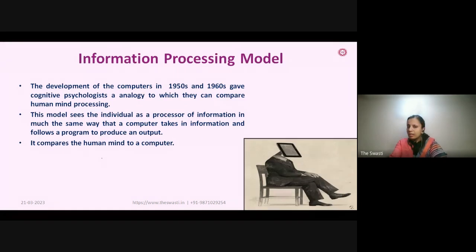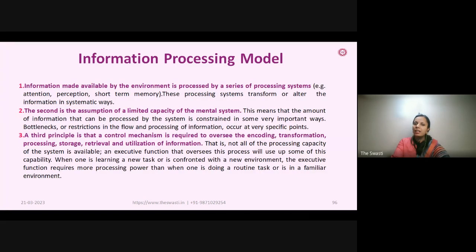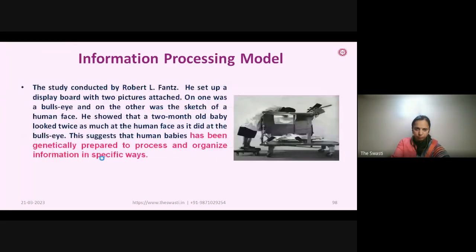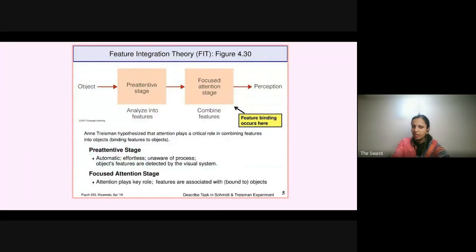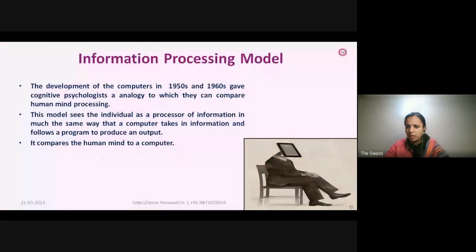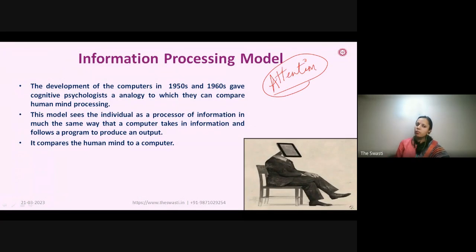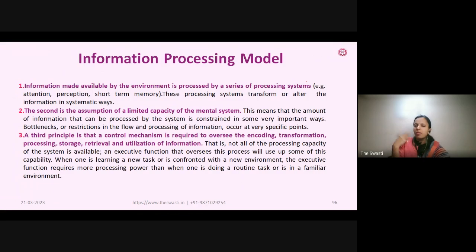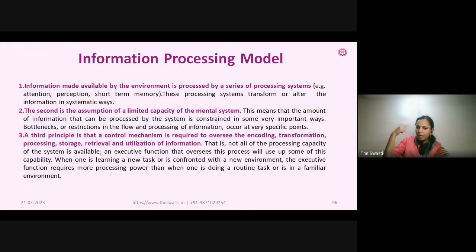In your syllabus there are two models: the information processing model and the feature integration theory, also called the feature integration model. The information processing model is based on the idea of the human mind assumed as a computer. We get all information from our environment but our mental capacity is limited. There is encoding, transformation, processing, storage, and retrieval of memory and information utilization.